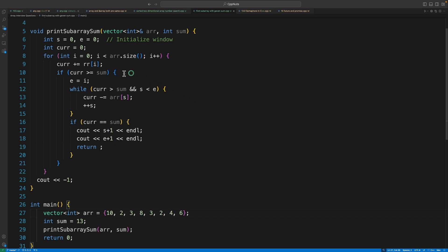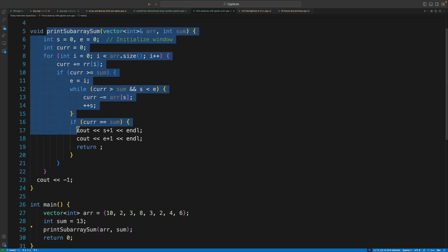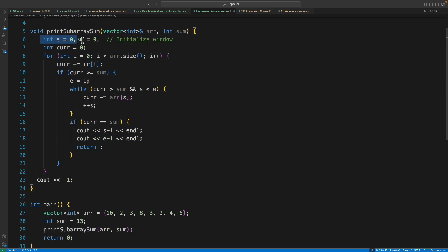Now let's look at the code. This is your program. We have the array, exact same elements, and we are saying that sum is 13. We will pass this to the driver function. Here we will do all the magic. As I said, start and end is initialized with zero. So this is your window and we have this current variable to track what is the current actual window sum.